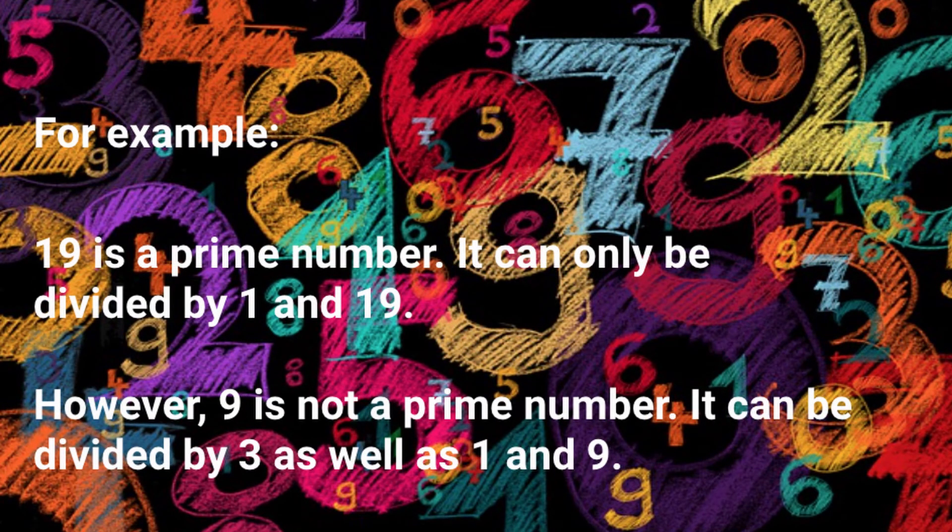For example, 19 is a prime number. It can only be divided by 1 and 19. However, 9 is not a prime number. It can be divided by 3 as well as 1 and 9.